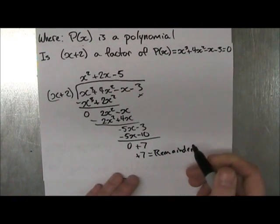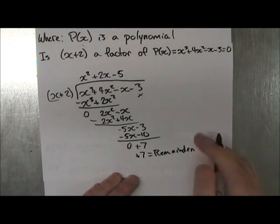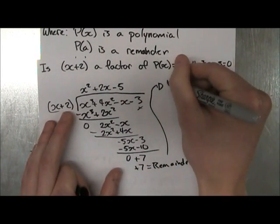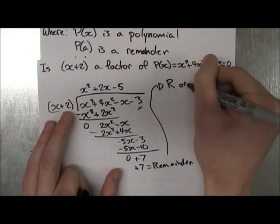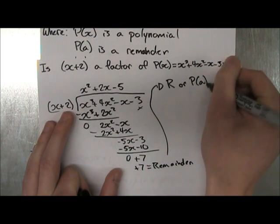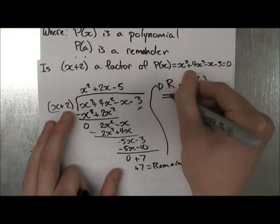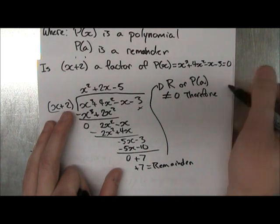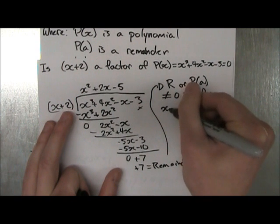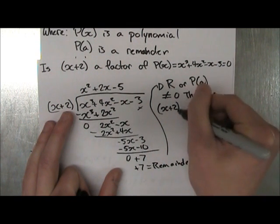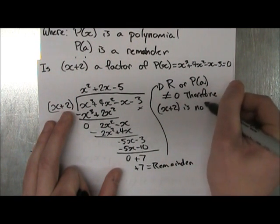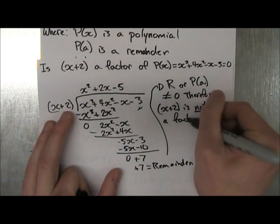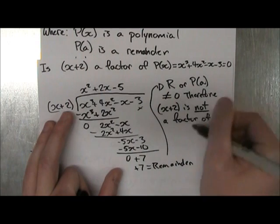So because your remainder does not equal 0, here I'll write it up here, remainder, or P(a), whatever you prefer, is not equal to 0. Therefore, x plus 2 is not a factor of P(x).